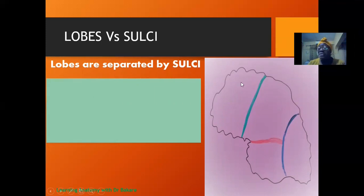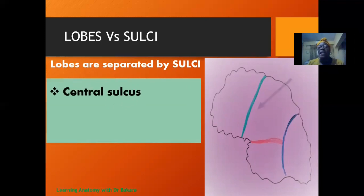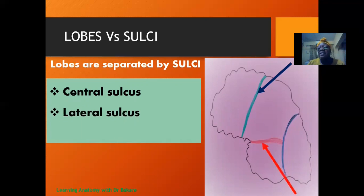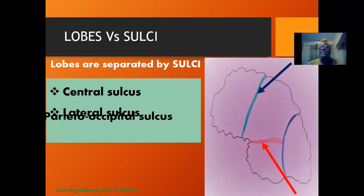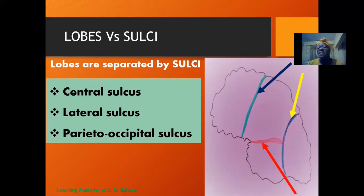We have three sulci. The first is the central sulcus, which divides the frontal lobe from the parietal lobe. The second is the lateral sulcus, which separates the parietal lobe from the temporal lobe. The third is the parieto-occipital sulcus, which separates the parietal lobe from the occipital lobe.